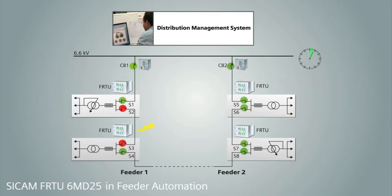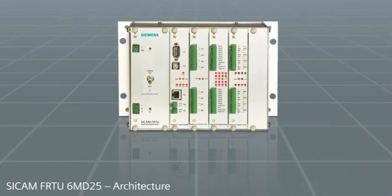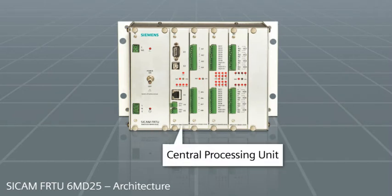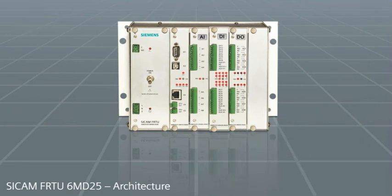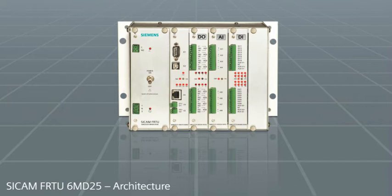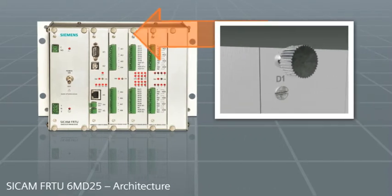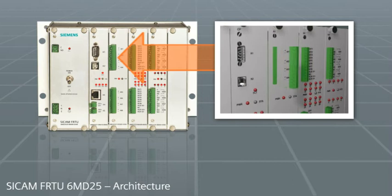The FRTU has a modular and scalable architecture with power supply, central processing unit, and input/output (IO) cards. The IO cards are interchangeable and can be placed in any IO slot. All cards are fixed in or removed from the front by innovative captive screws. The connector terminals are detachable and self-locking.